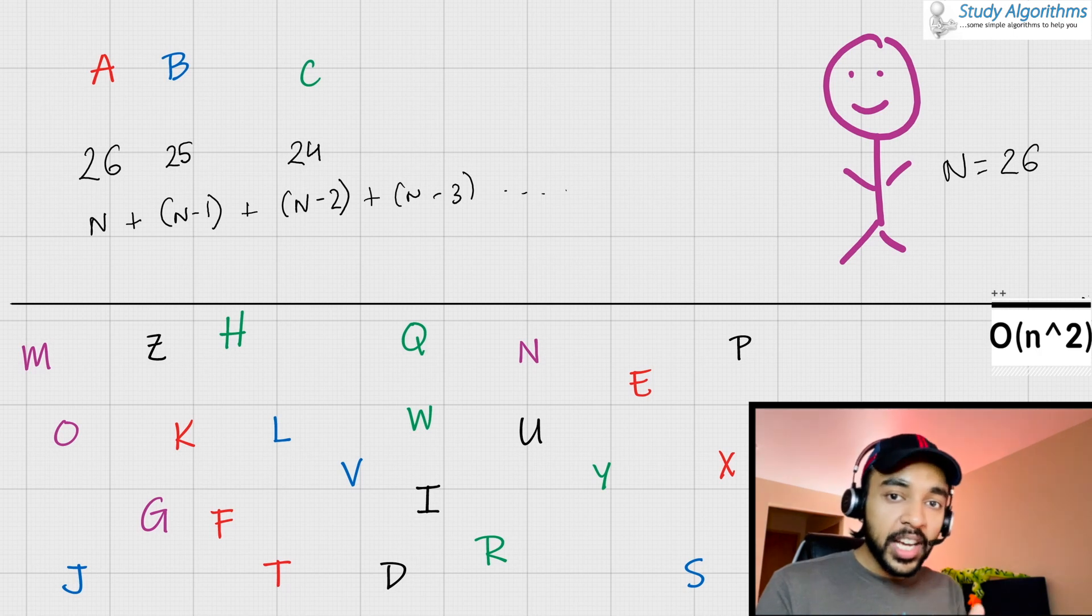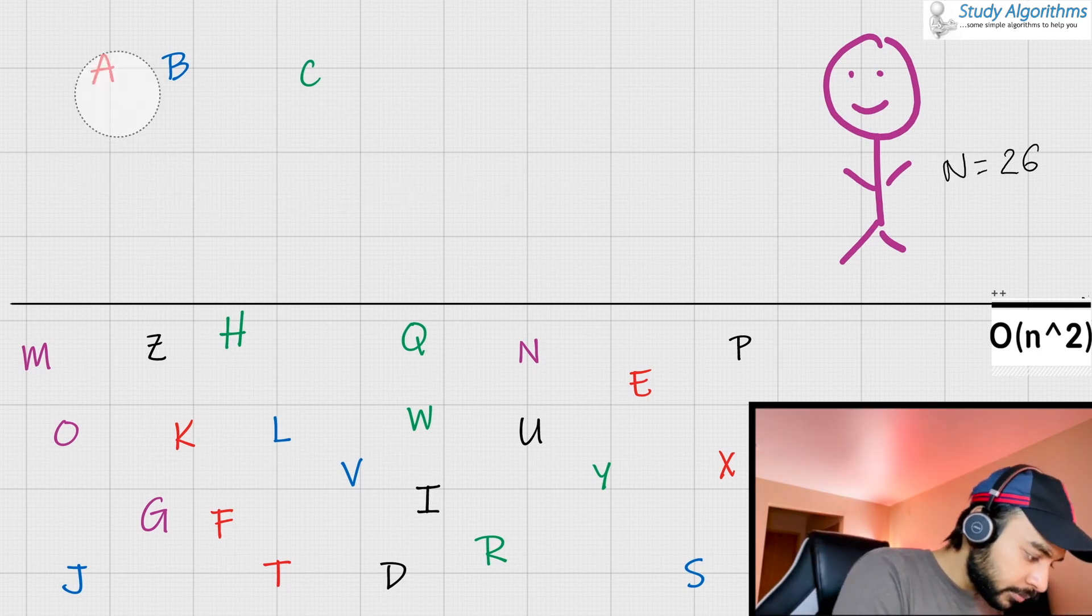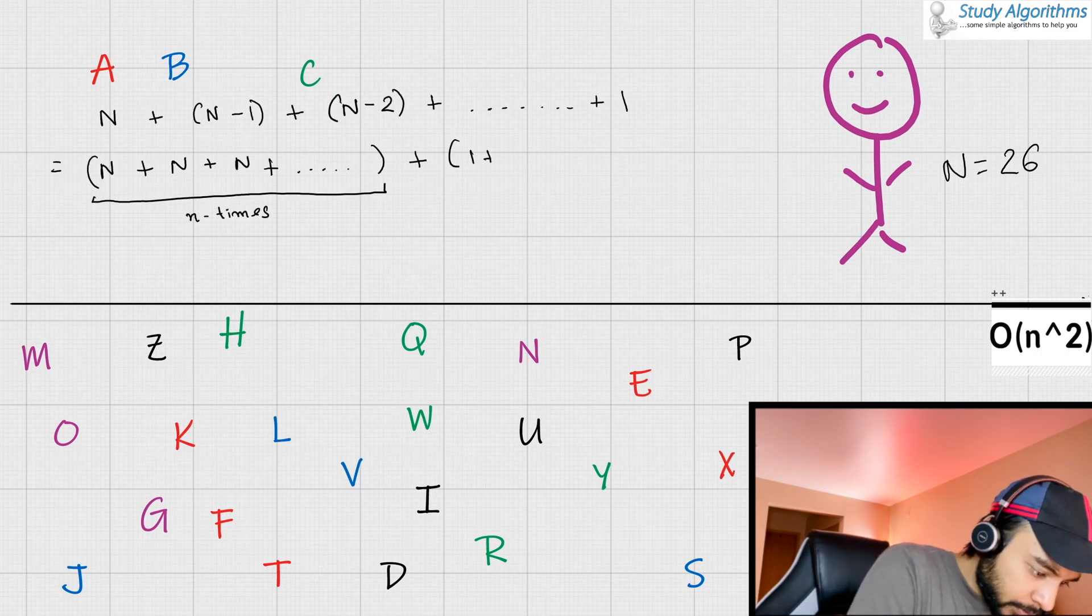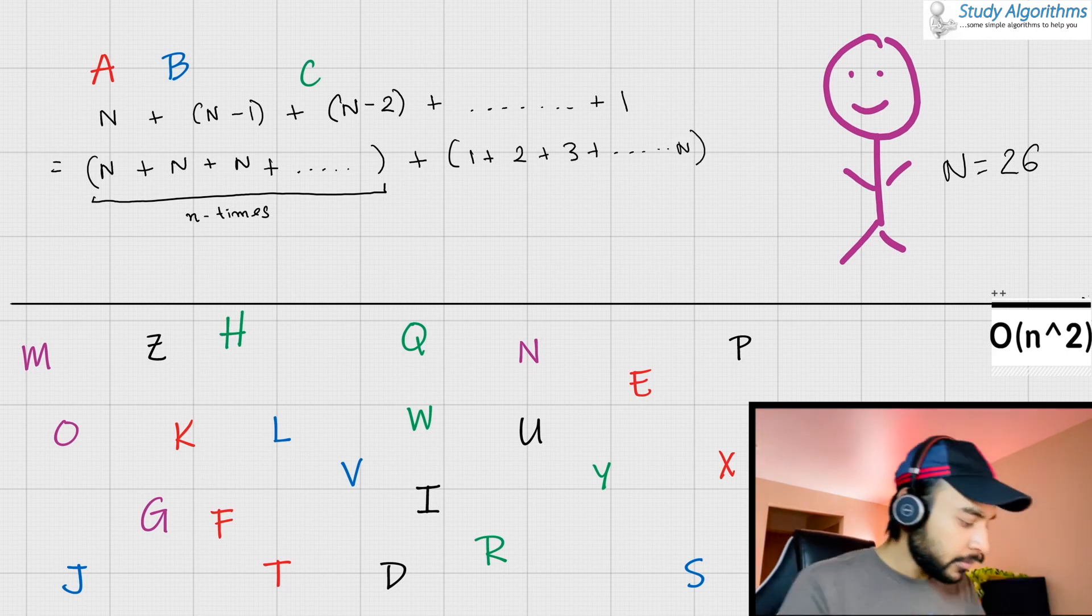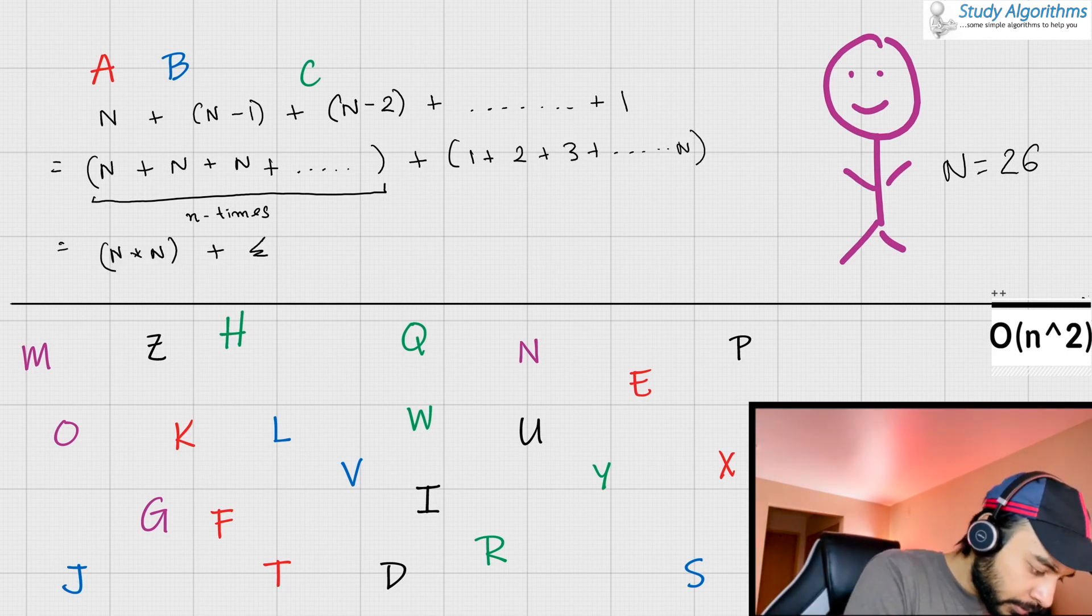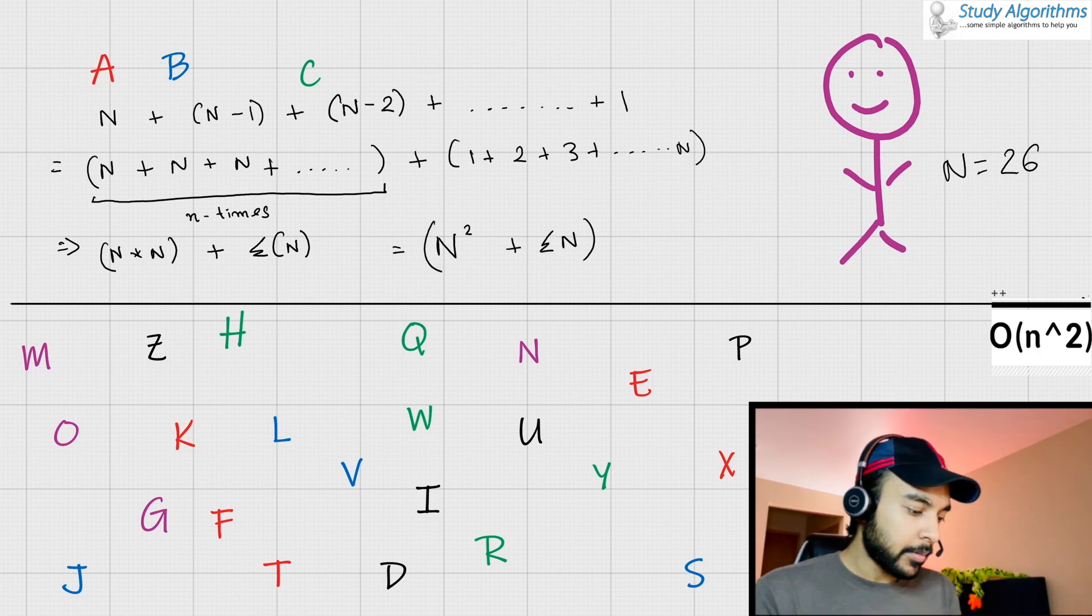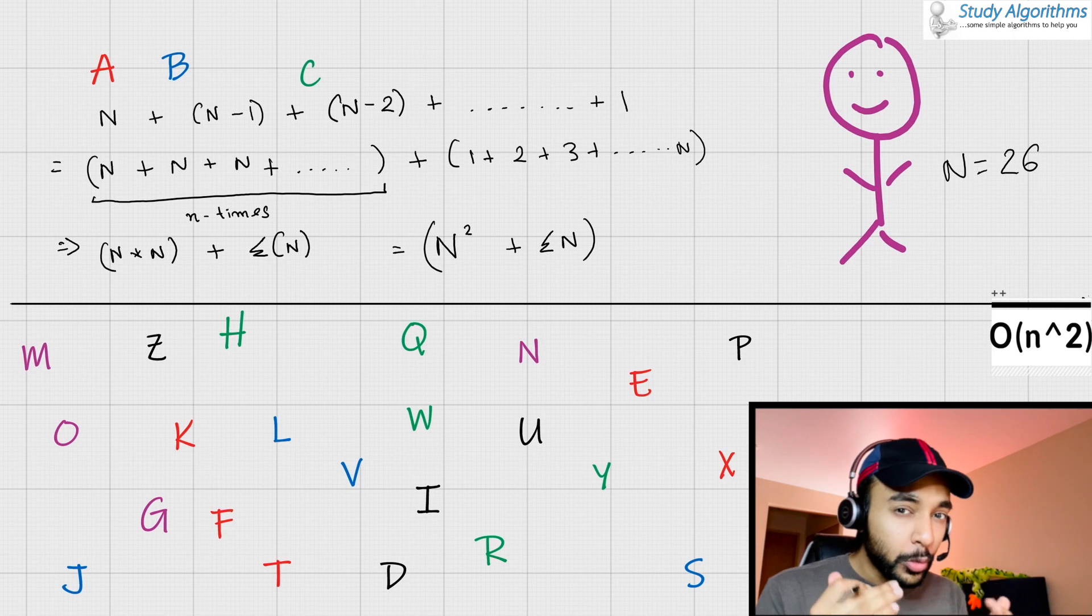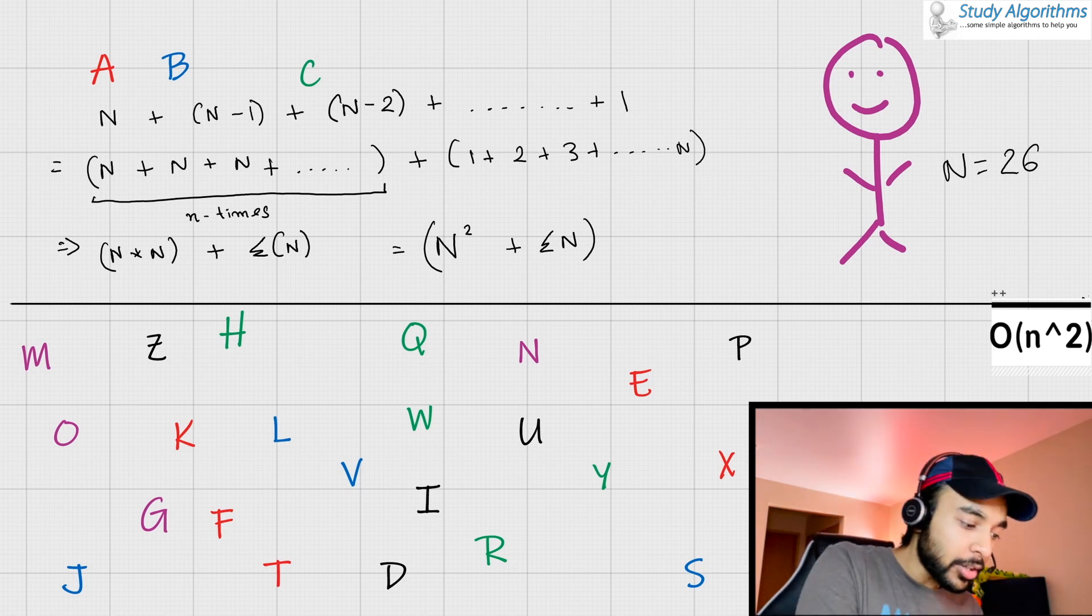So if you take a summation of this series, it would look something like... And hence, you see that we are doing close to N squared number of operations. And hence, this complexity is known as order of N squared.